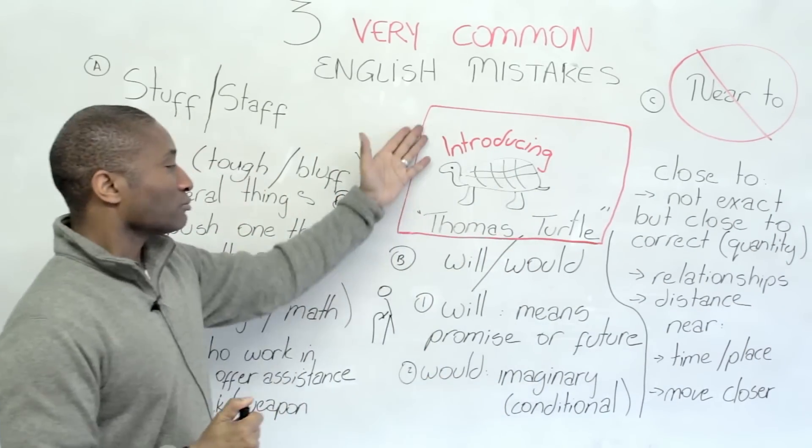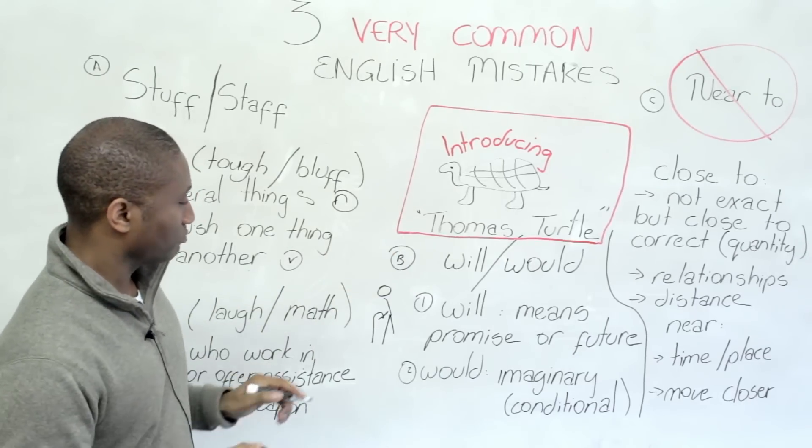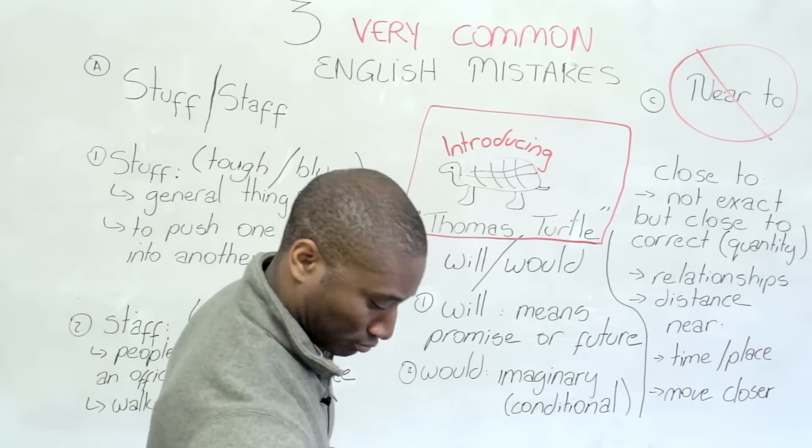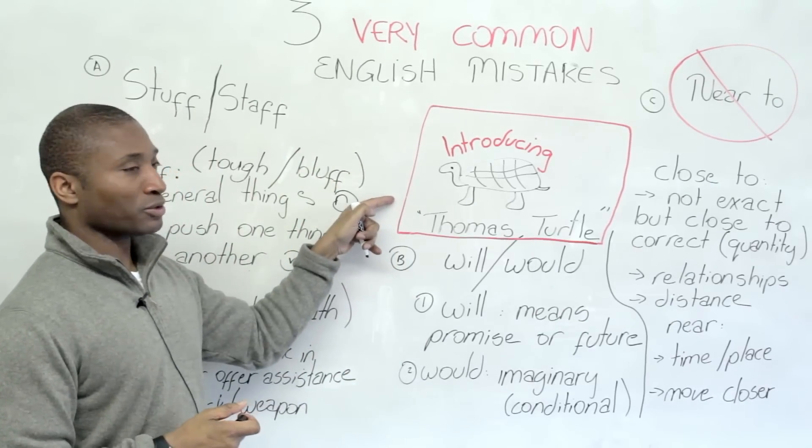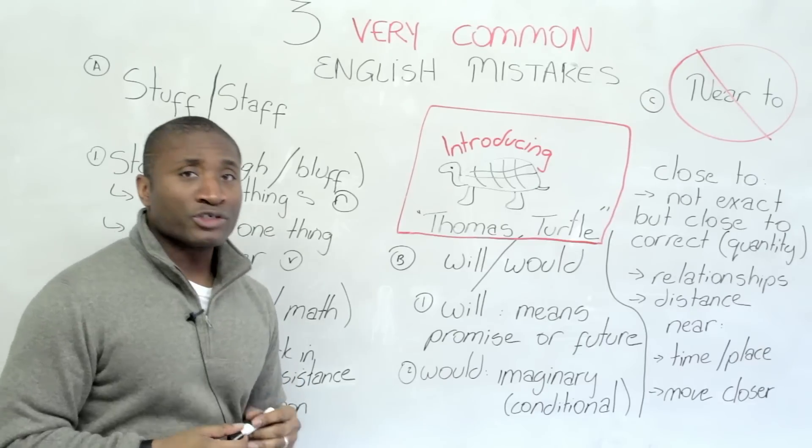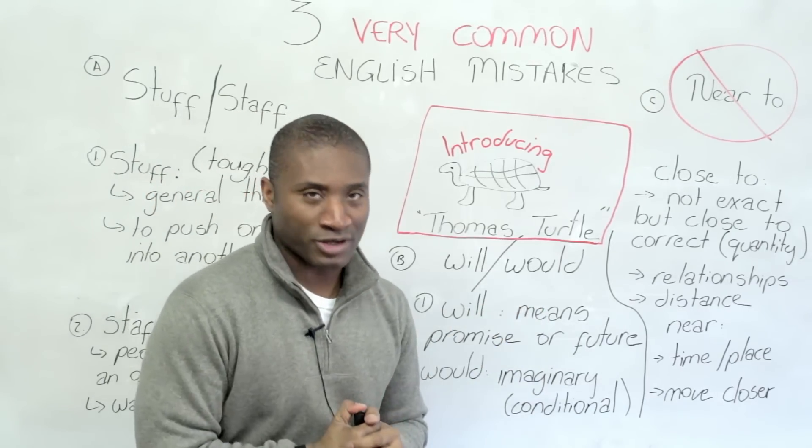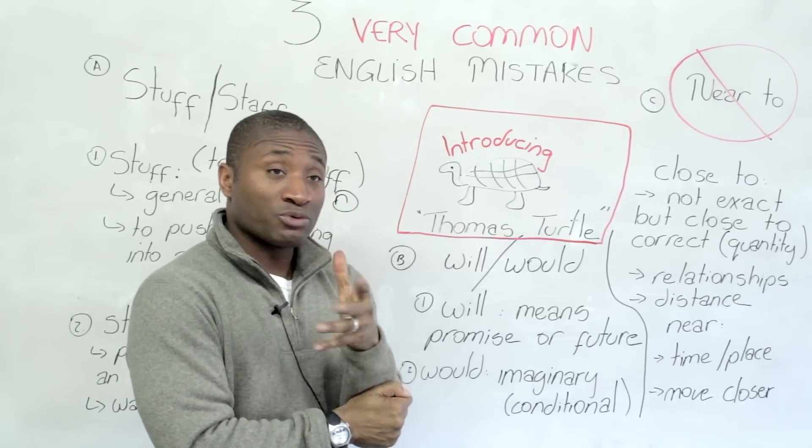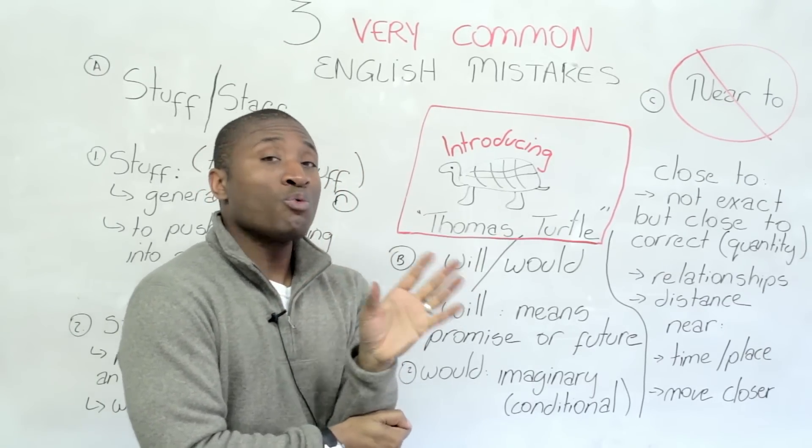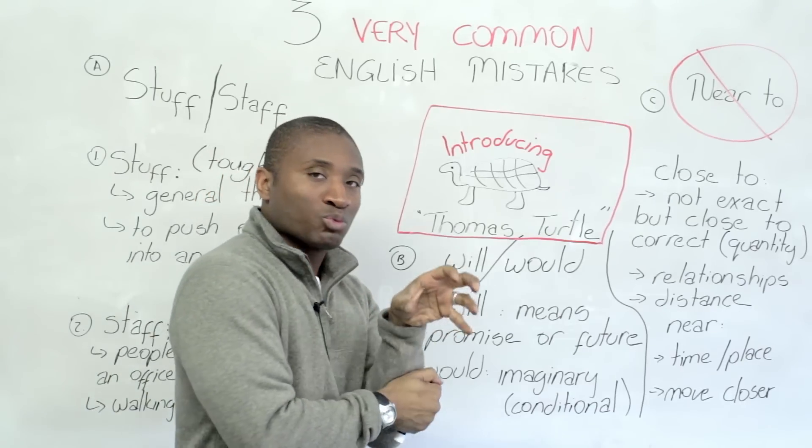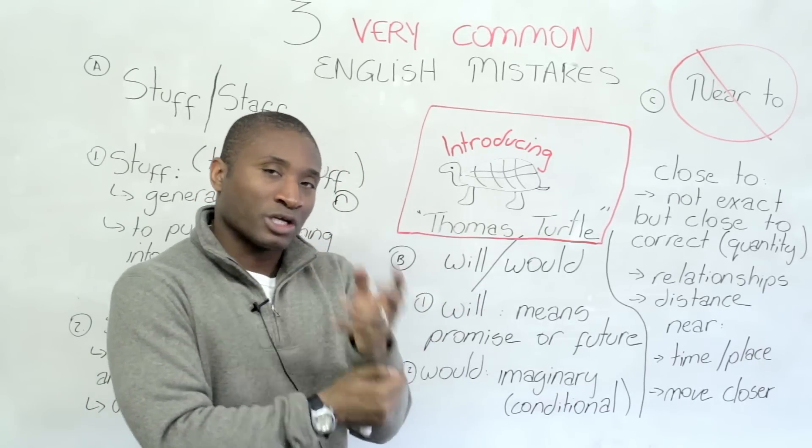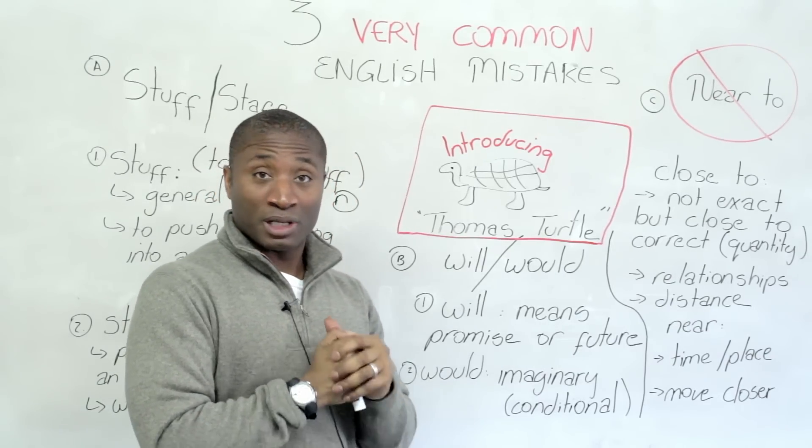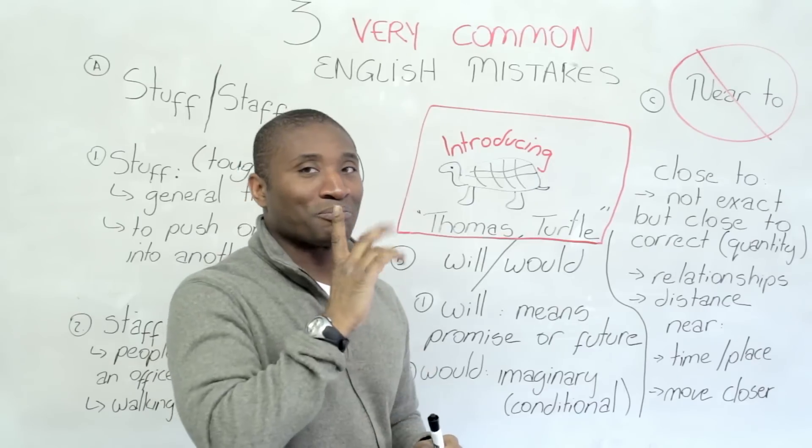And here we have staff, laugh, math. So, let's say it again. Ready? You can repeat. Staff, laugh, math. That's the at sound. So the big difference when people have problems is usually the pronunciation. Ah and uh. So, stuff, tough, bluff, uh. Staff, laugh, math, ah. Cool? Next mistake. Thomas Turtle, tutor, going to help us with will and would.